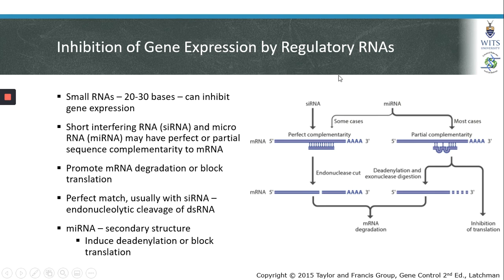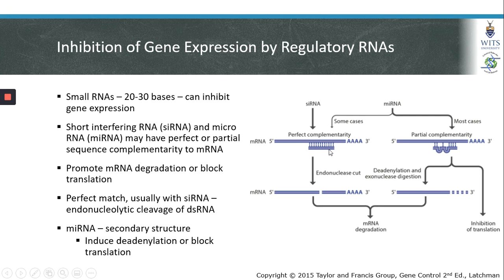Regulatory RNAs can also play a role in inhibiting gene expression through RNA degradation. Small RNAs, which are 20 to 30 bases in length, can inhibit gene expression. Short interfering RNAs and microRNAs may have perfect or partial sequence complementarity to an mRNA strand. These siRNAs or microRNAs promote RNA degradation or can block translation. If there is perfect sequence complementarity, an siRNA or microRNA that binds perfectly to an mRNA can promote degradation through endonucleolytic cleavage of the RNA strand, leading to degradation of the mRNA through exonuclease digestion.